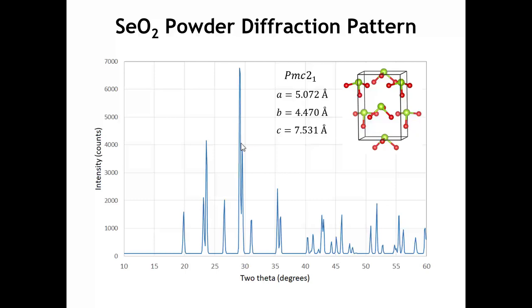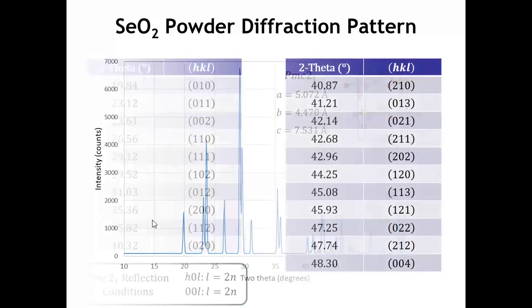Let's illustrate this with an example. Here is the powder diffraction pattern for selenium dioxide. If you look this compound up in the ICSD, you would see that it's an orthorhombic crystal and the space group is PMC 2₁. Now if we look more carefully at where the peaks are located and what their indices are — because if we have successfully done indexing and we have the parameters for A, B, and C — we can assign HKL values to each peak, giving us this list.